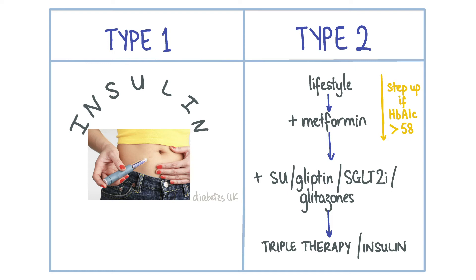The target HbA1c for patients with diabetes mellitus is less than 48 mmol/mol, or 53 mmol/mol if the patients are on hypoglycaemic drugs. The HbA1c should be checked every three to six months in patients with type 1 diabetes. It is also checked every three to six months in patients with type 2 diabetes until they are medically stable, after which it is done six-monthly.